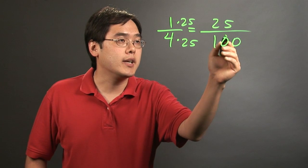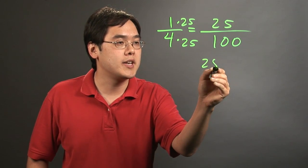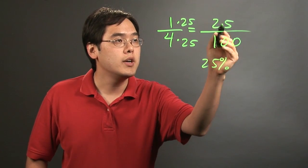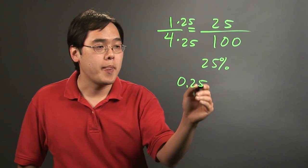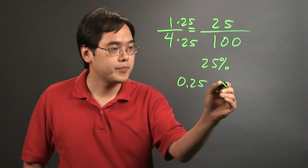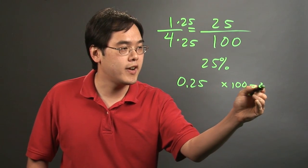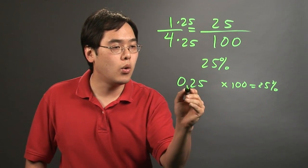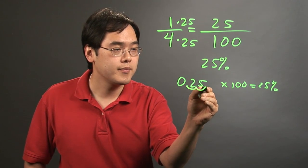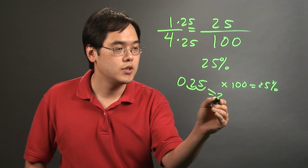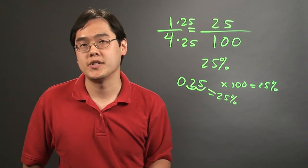Now you can think of it as immediately any number over a hundred can be thought of as that number percent. Or you can think of that as 0.25, and you can either multiply by a hundred to get twenty-five percent, or you can shift the decimal two places to the right, and that'll also give you twenty-five percent.